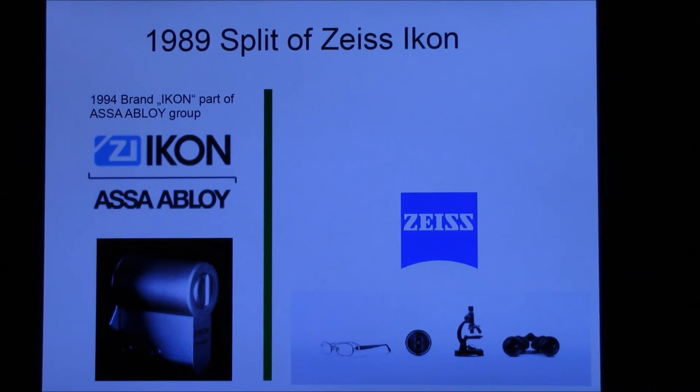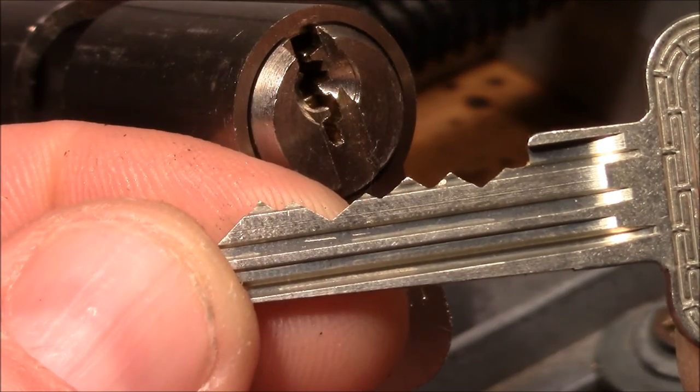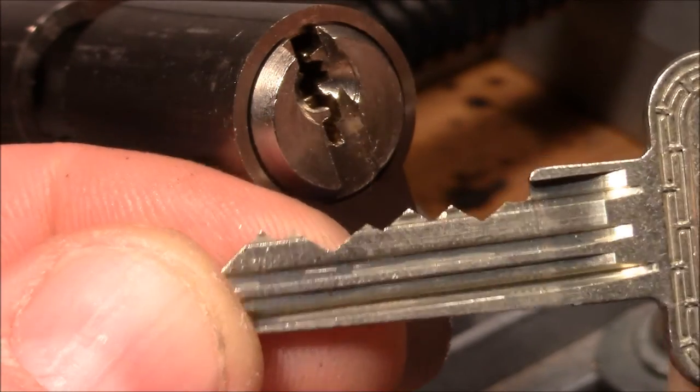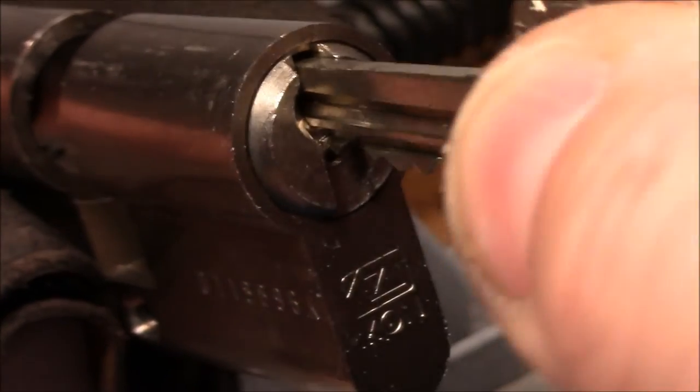Alright, so much for the history. Now let's go back to our lock. Lock is clamped in a vice, that's the key. Nice deep cut at position 4, but not too crazy. Works and is locked up.